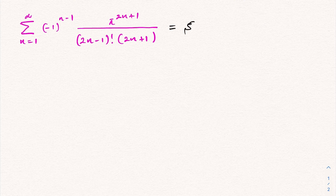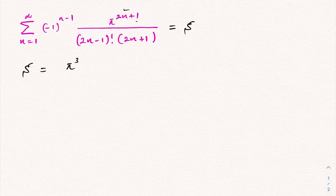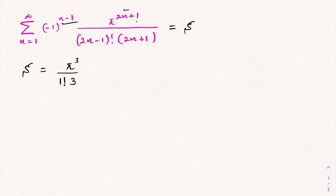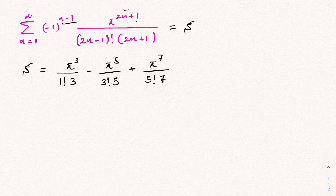First, let's take this sum equal to S. As a first step, let's find the first few terms. When n=1, we have (-1)^0 = +1, so the first term is 5³ over 1! times 3. The second term, when n=2, is minus 5⁵ over 3! times 5. Then the next term is 5⁷ over 5! times 7, then minus, and so on.